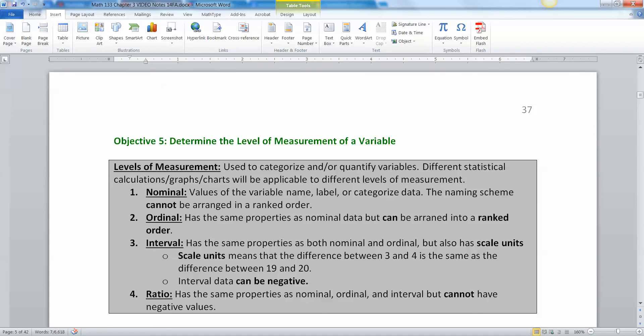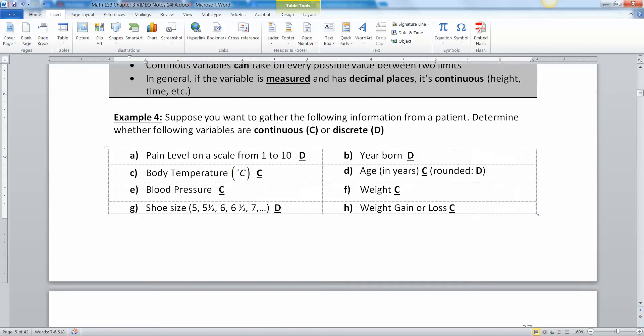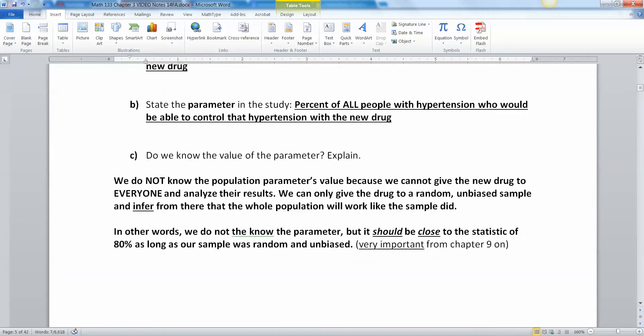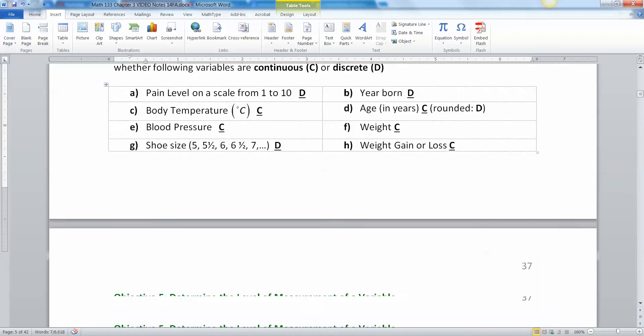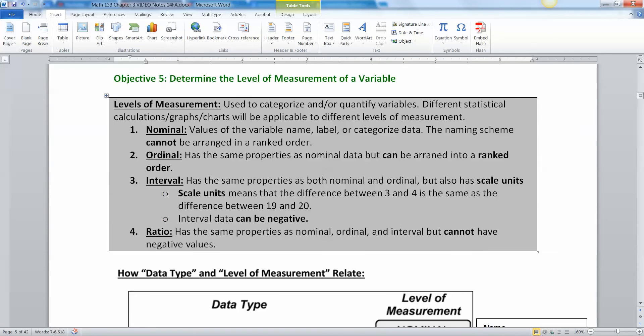Okay, so now we're going to separate it out one again in a different way. We're going to talk about levels of measurement because different levels of measurement are better than others. So the worst level of measurement is the nominal level. That's when you can just categorize the data and label it, but you can't really arrange it in a ranked order.